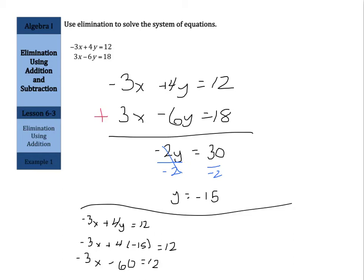I'm going to rewrite this: negative 3x minus 60 equals 12. If I go ahead and add 60 to both sides, you're left with negative 3x equals 72. And divide by negative 3, divide by negative 3, and x equals negative 24.